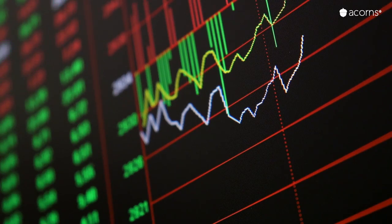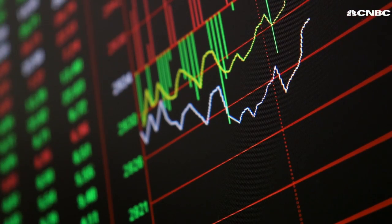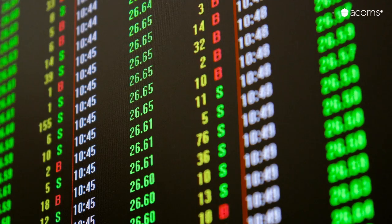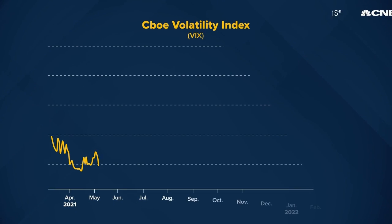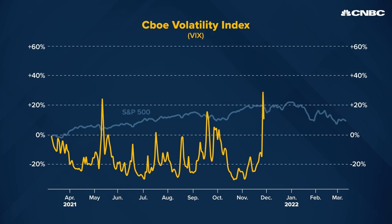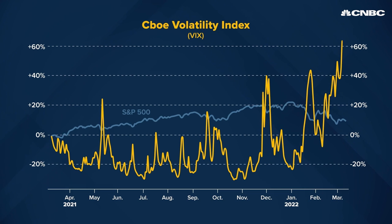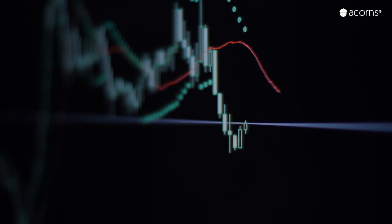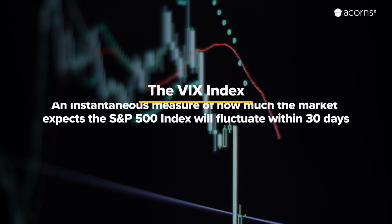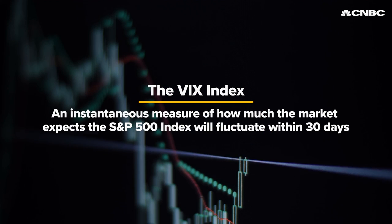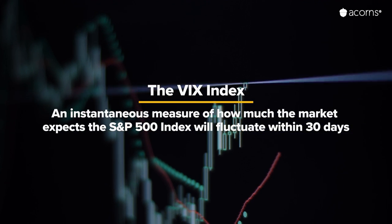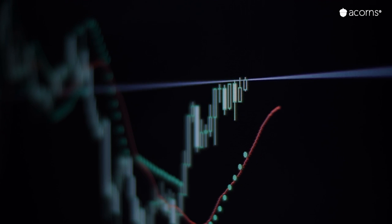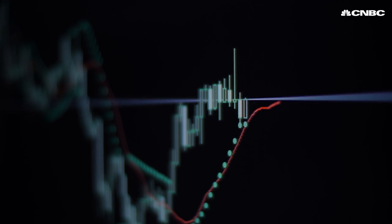There is generally an inverse relationship between the activity in the major index — the S&P 500 — and what's going on in the VIX. The VIX is a forward-looking index measuring implied volatility. As the CBOE puts it, the VIX index is intended to provide an instantaneous measure of how much the market expects the S&P 500 will fluctuate within 30 days, and measures the degree to which investors are uncertain about the stock market.